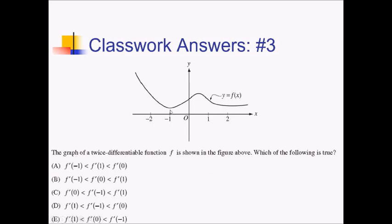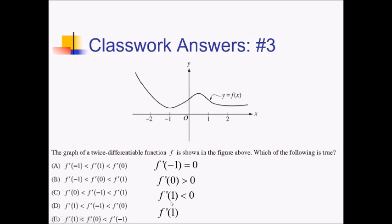f prime of negative 1 is right here — that's a horizontal tangent line, so that's an f prime of 0. Let's do f prime of 0 next. At 0, we appear to have a positive slope, so although we don't know how positive it is because there's no y scale, we can say that f prime of 0 is greater than 0. And then finally, f prime of 1 is going to be less than 0 because we're decreasing on the original function. So putting these in order: first is f prime of 1 (less than 0), then f prime of negative 1 (equals 0), then f prime of 0 (greater than 0).